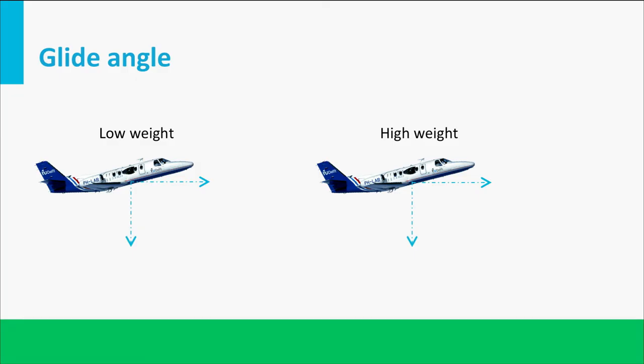Now let's take two aircraft weights, one light and one heavy. The descent angle will be identical, because there is no difference in the aerodynamic shape. However, the airspeed of the heavy aircraft will be larger, since in both cases the aircraft flies at the same optimal constant CL.